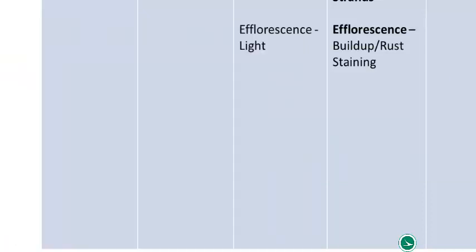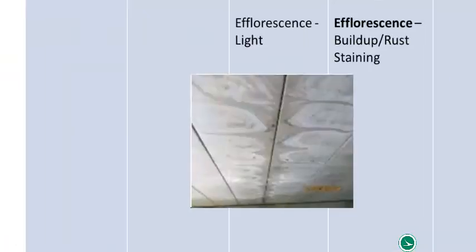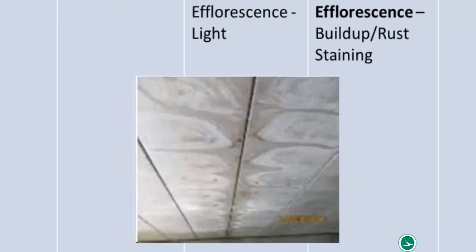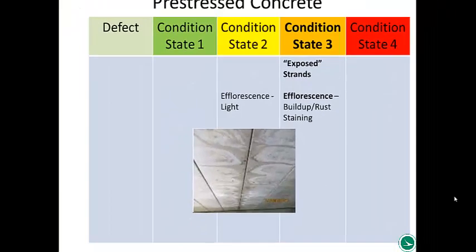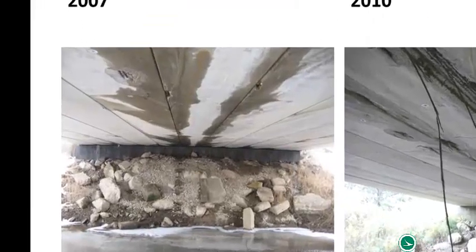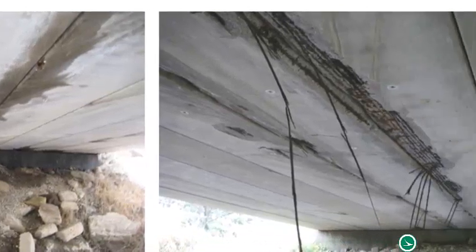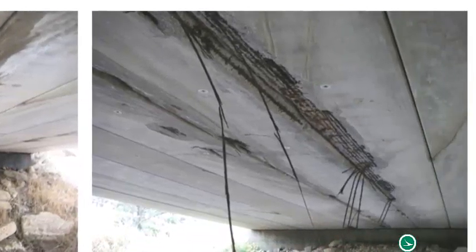Light efflorescence would be condition state two — where there's evidence it's there but no buildup, just evidence of moisture between the keyway. You're going to discount both beams, so the linear foot is effectively times two. The linear feet of both the left beam and the right beam would be condition state two for adjacent box beams. Here's the same example with active leakage — and three years later, you can see the strand exposure. Within three years, there was an impact to capacity and we had to post the bridge. Because we inspect every year, we were able to monitor it and it wasn't a safety concern.